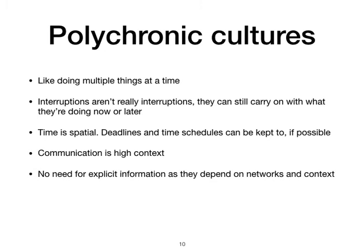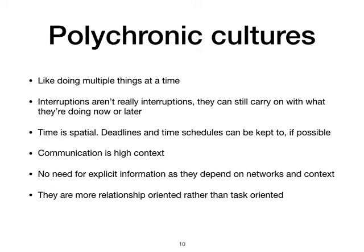Since polychronic cultures are high context, there's no need for explicit information as they already depend on networks, context, and backgrounds. Information doesn't need to be written explicitly because there's a lot of context to things — conventions, history, and shared understanding. That's why polychronic cultures rely mostly on relationships, and that's why they are more relationship-oriented than task-oriented. If you have a good relationship with someone, you can get the work done quickly and efficiently.